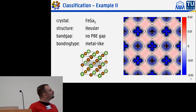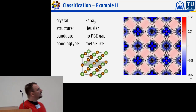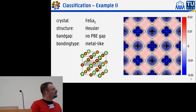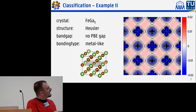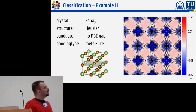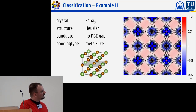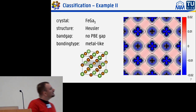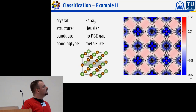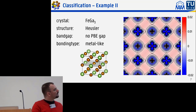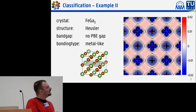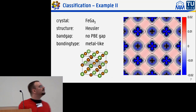A metallic example is this iron gallium alloy, where you can see electron accumulation in the interstitial throughout the depicted plane. The gallium atoms appear fairly spherical, and although there is some directionality at the iron p-sites, the large electronic accumulation in the interstitial is typical of a metal-like structure.